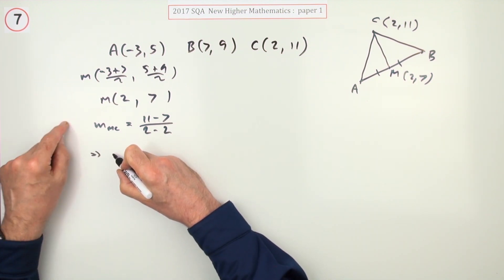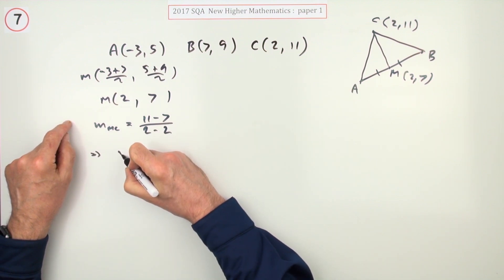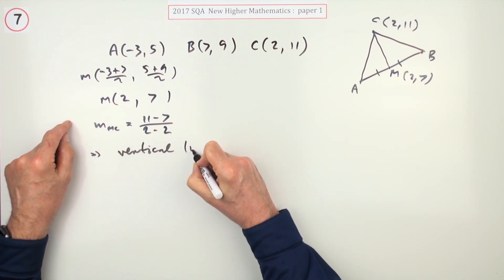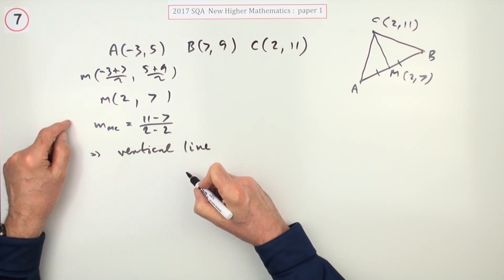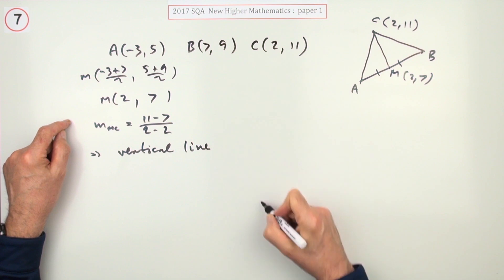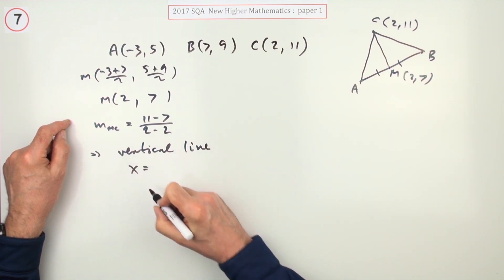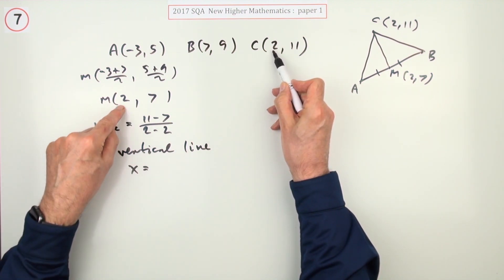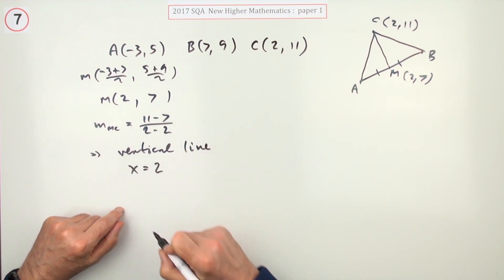That means the line is vertical. All vertical lines have the equation constant x. It cuts the x-axis. So x equals whatever the x-coordinate is, which in this case is 2.